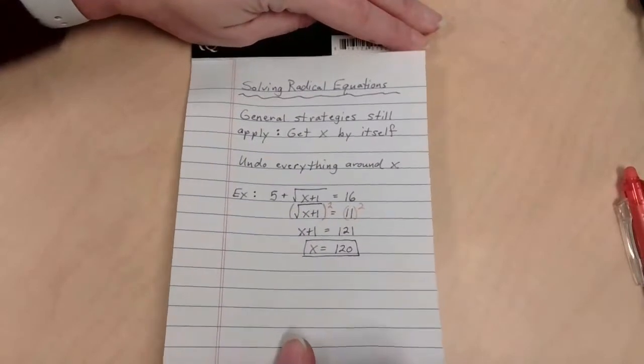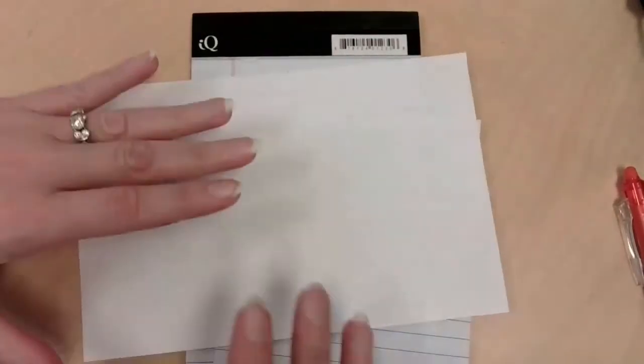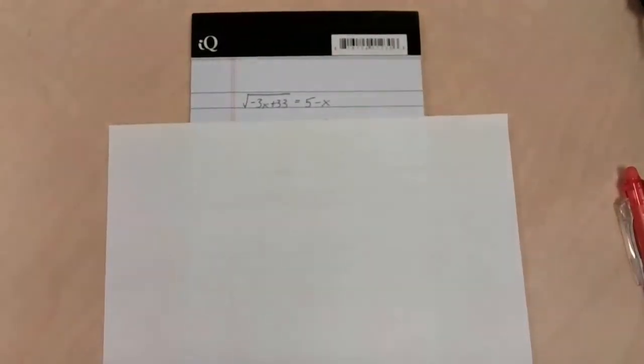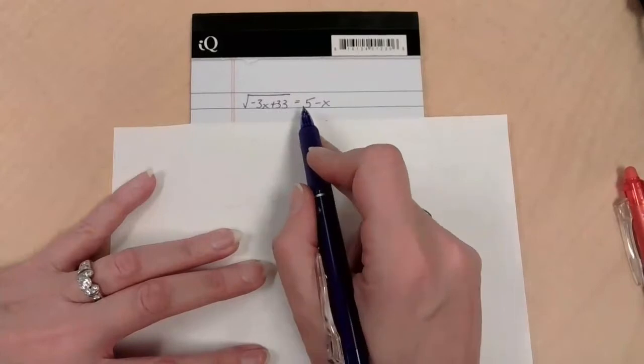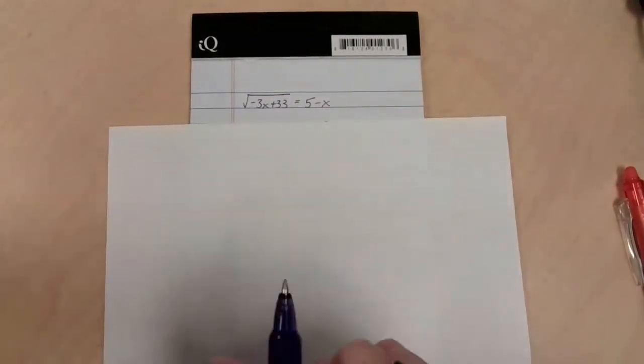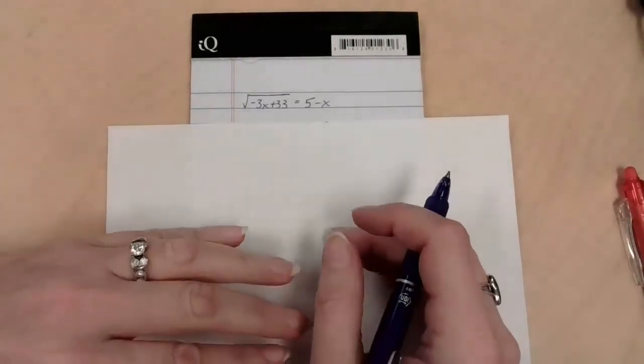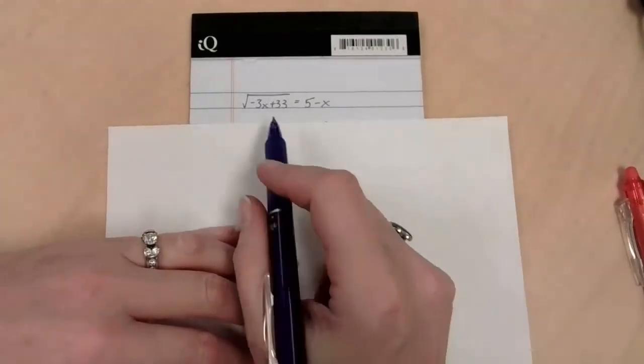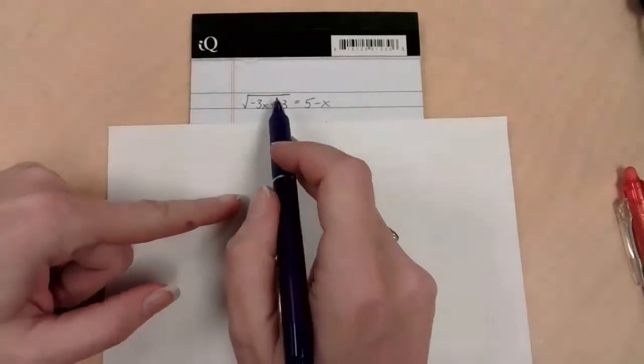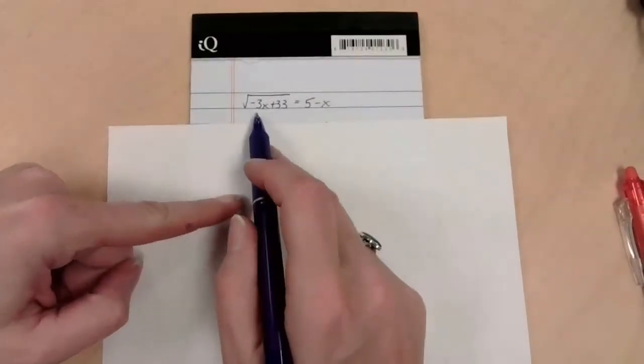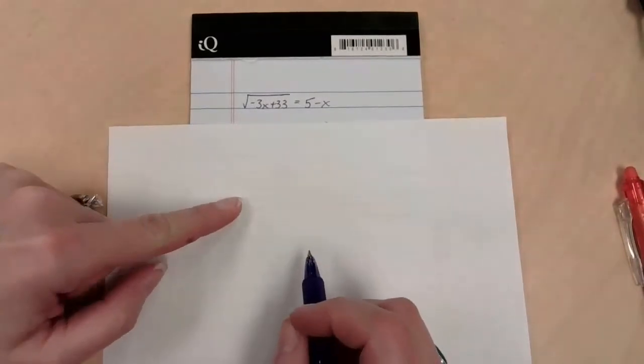So, second example of the day. Don't peek. There we go. All right. Here we go. Oh, that's much more unattractive looking. Excellent. So we have the square root of negative 3x plus 33 equals 5 minus x. Okay, wait a minute. How are we supposed to get x by itself if I have an x here and an x here?